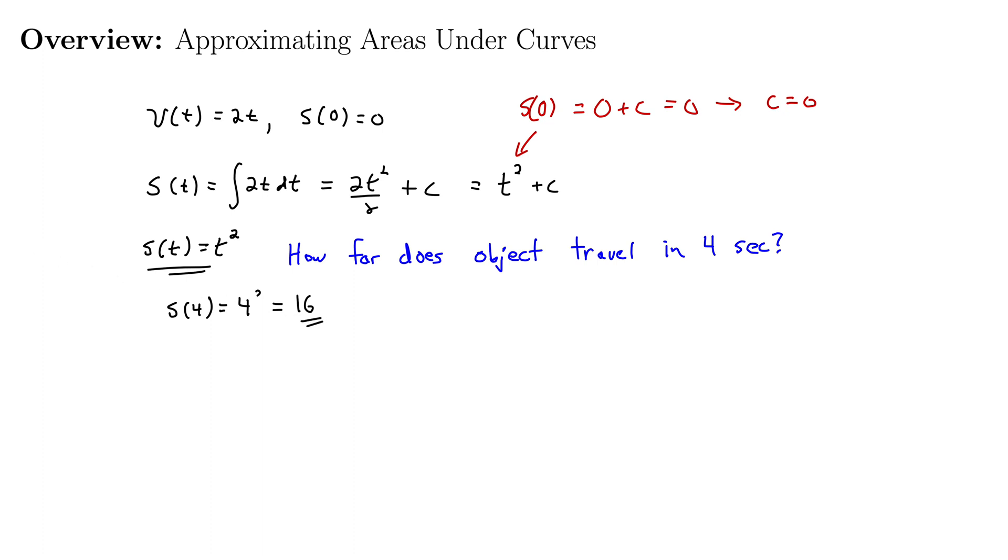What does this have to do with areas under the curves? Well, let's try something different. Let's try graphing this velocity function and looking at the area under it. And this is very fundamental to what we're going to do moving forward. So we're plotting time on the x axis and velocity up here. And this function is 2t, so it's just going to be a very steep line. We can put some units in here, maybe 1, 2, 3, 4. And at 4, we're going to go all the way up to 8.